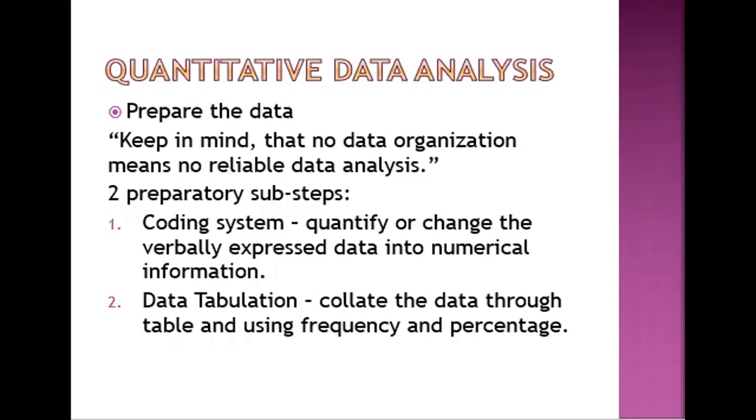Another example is educational attainment, which is part of your variable. For example, in your study, if elementary, the code is number two. If high school, you can give it four. For college, number six. If master's, number nine. For PhD, number twelve. It depends on the researcher what numbers are placed there.